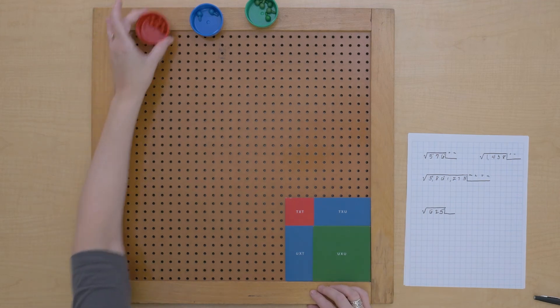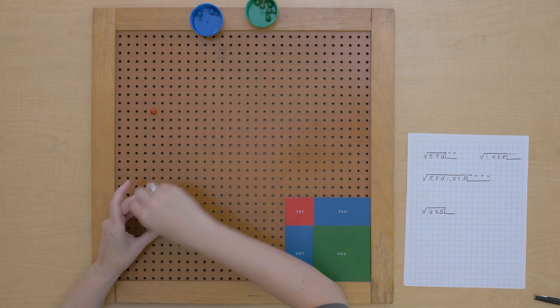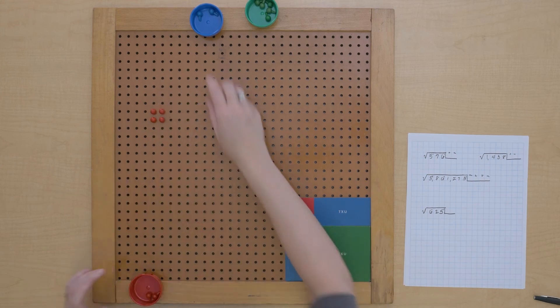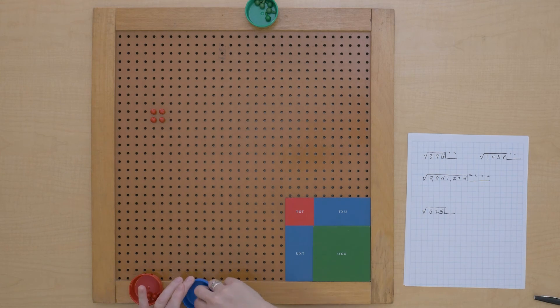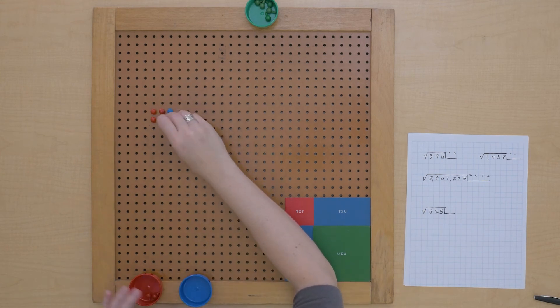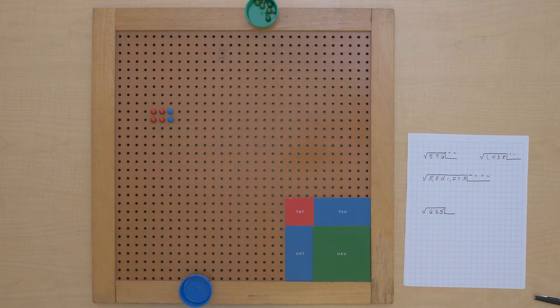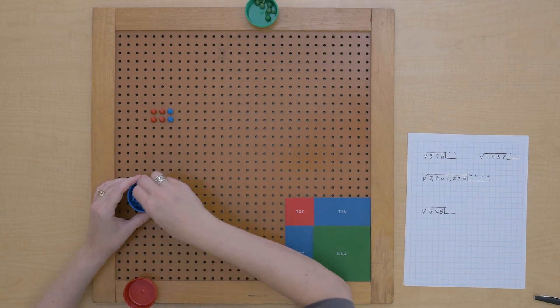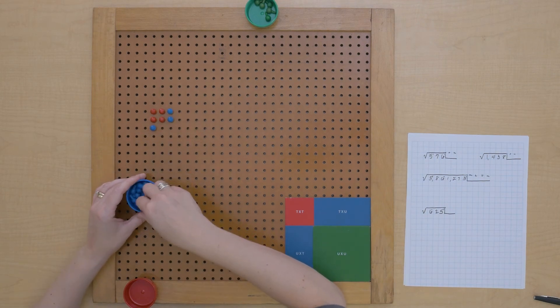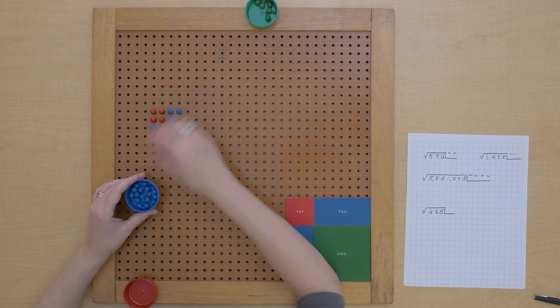So we'll start with our largest category, building a square. That's all rectangles with the tens. So I'm going to need to do some exchanging.